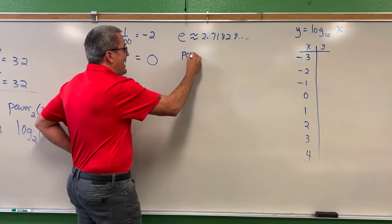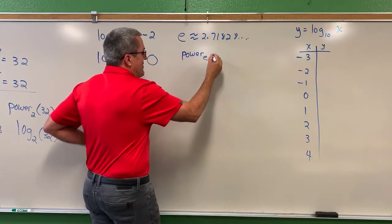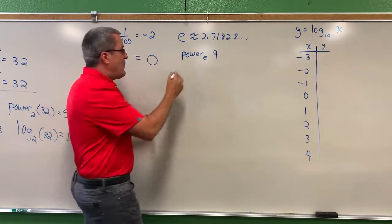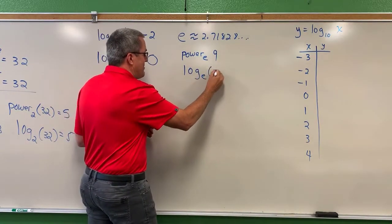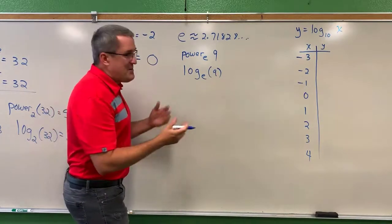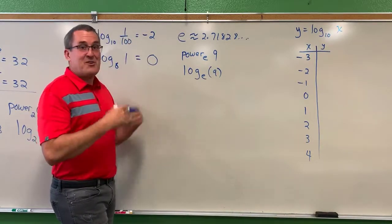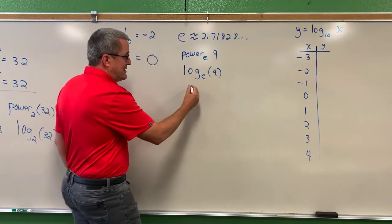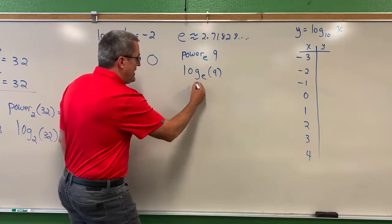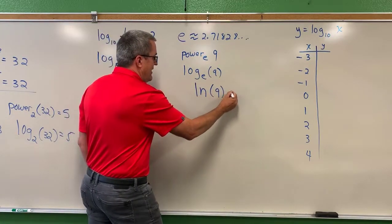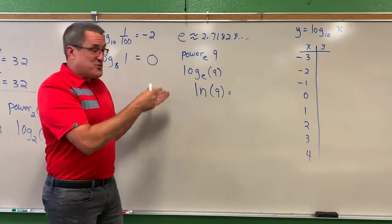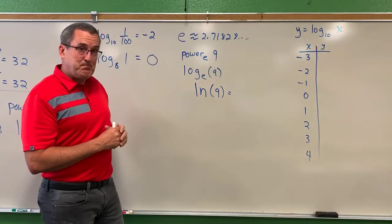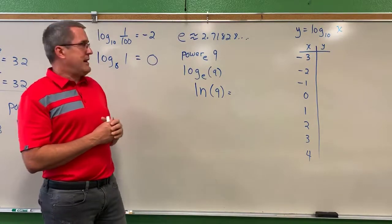And so we might want to ask, what's the power on E that produces, I don't know, like nine? Now, of course, we wouldn't say power. We would say, what's the log base E that produces nine? And of course, we wouldn't even really say that because over the course of history, if you have a base E logarithm, it has its own special symbolism. It's a natural logarithm. And so we would say the natural log of nine. So when you see ln, a natural logarithm, you can think log base E, or you can think what's the power on E that produces nine.